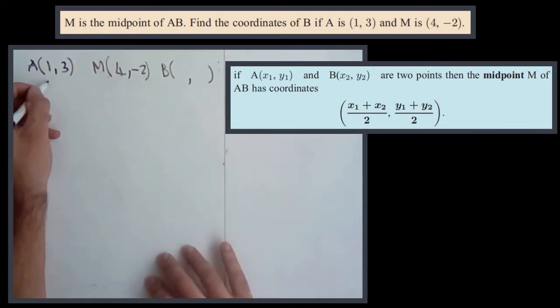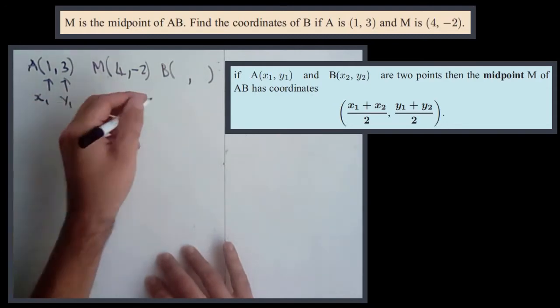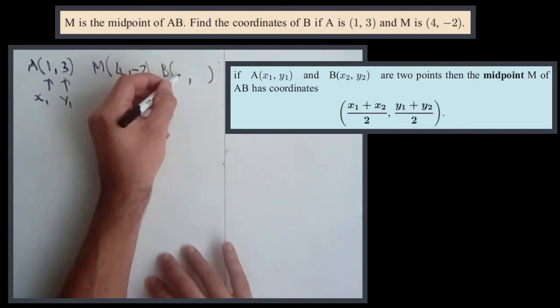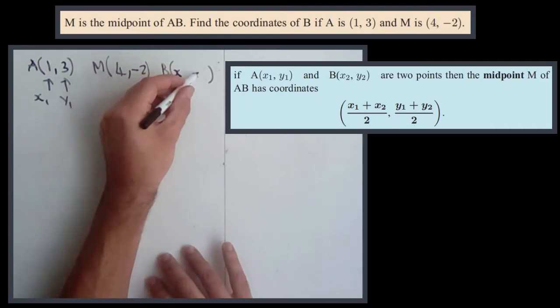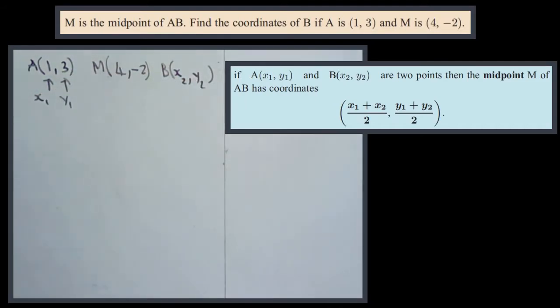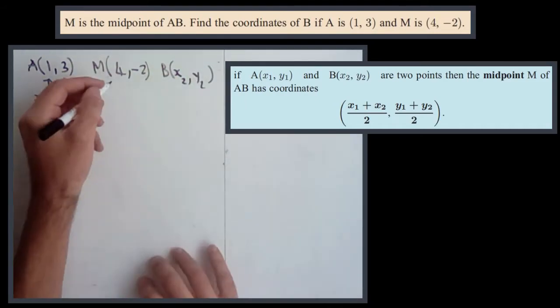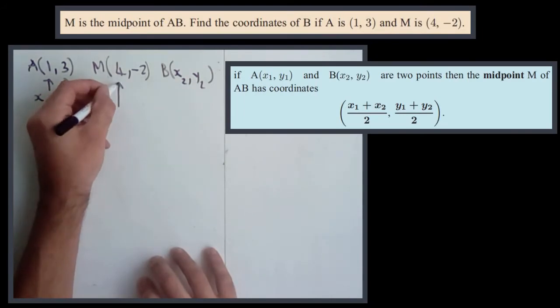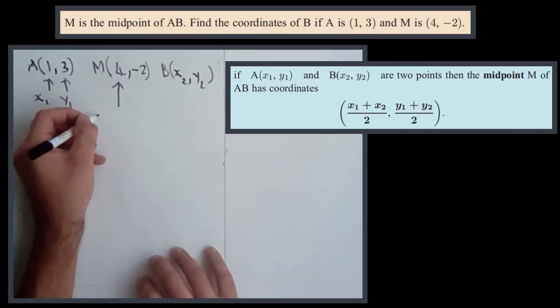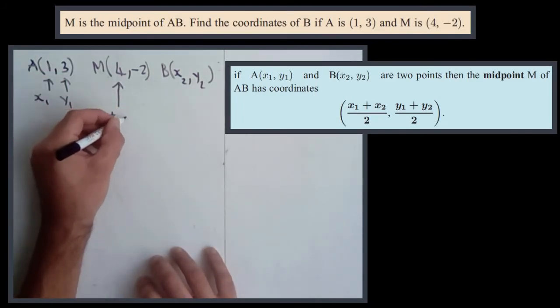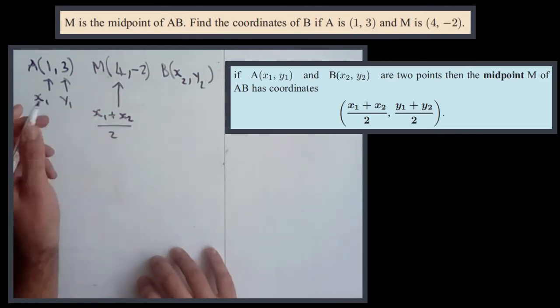So if we take our A, we'll call that point 1, which means this is (x1,y1). If we take point B, we're going to call that (x2,y2). So our M, this number here, 4, is going to be (x1+x2)/2. That's the 4.